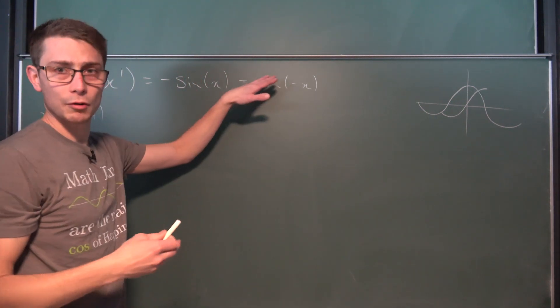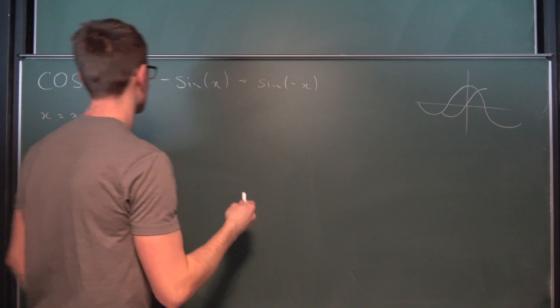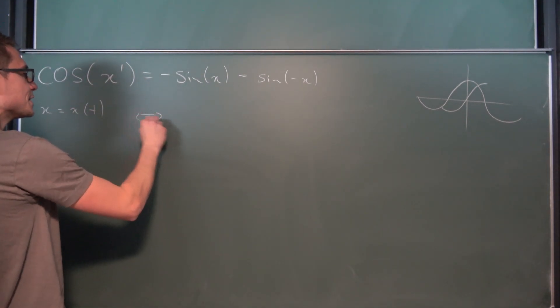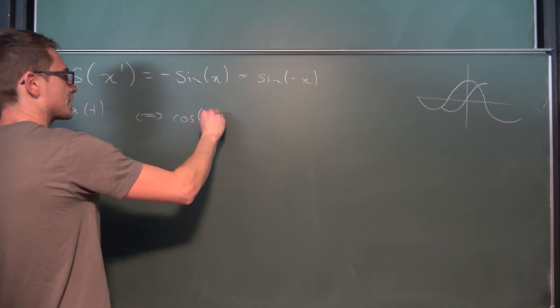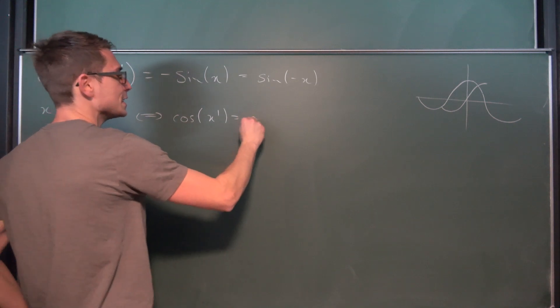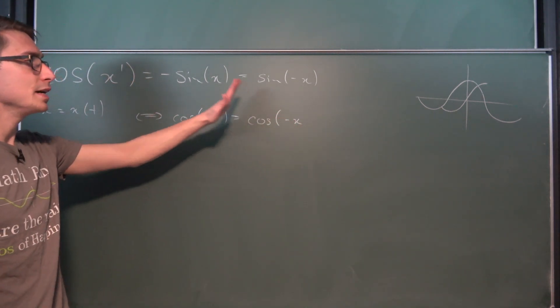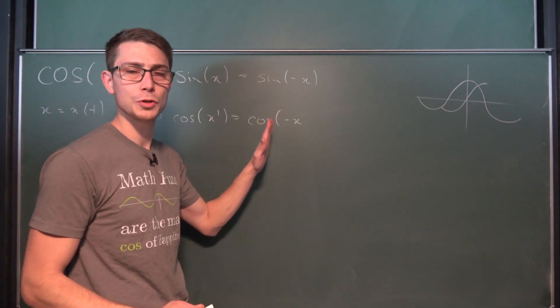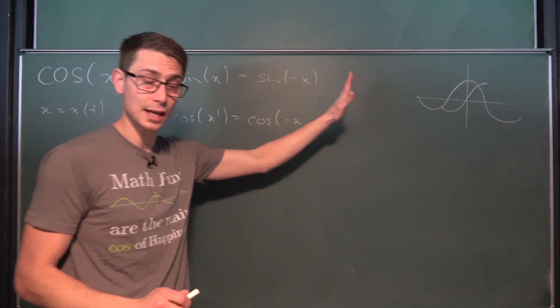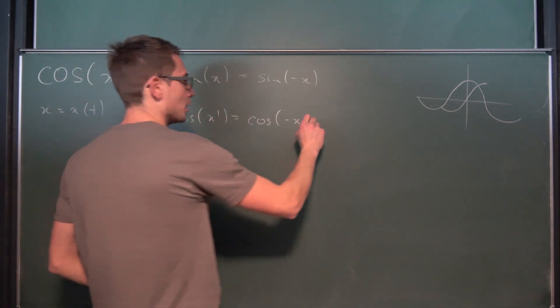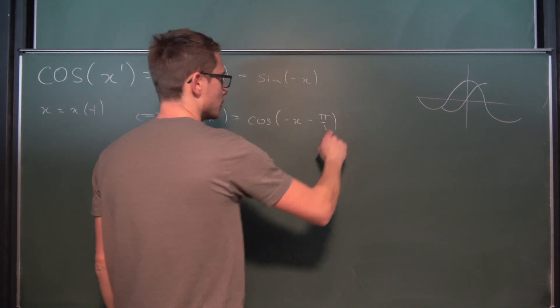So how is the sine of an argument connected to the cosine of another argument? Well that's to say that the cosine of x prime in our case is equal to the cosine of negative x. That's our argument. And we are going to shift the pi over two units to the right hand side giving us negative pi over two.